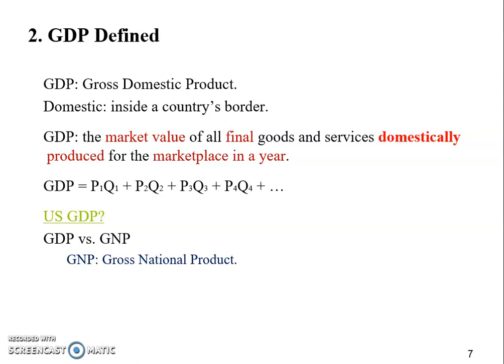When we look at GNP, what matters is nationality. Using the United States as an example: GNP means anything made by Americans, regardless of where it's made — it could be made in China or Germany by an American company, and it will still be counted as U.S. GNP. GDP means made in America — what matters is geographic location instead of nationality.